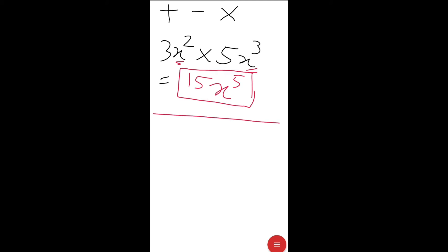If we try to do addition of 3x² + 5x³, it is not possible because they are unlike terms — their addition is not possible. But multiplication is possible. So please remember: multiplication of unlike terms is possible.